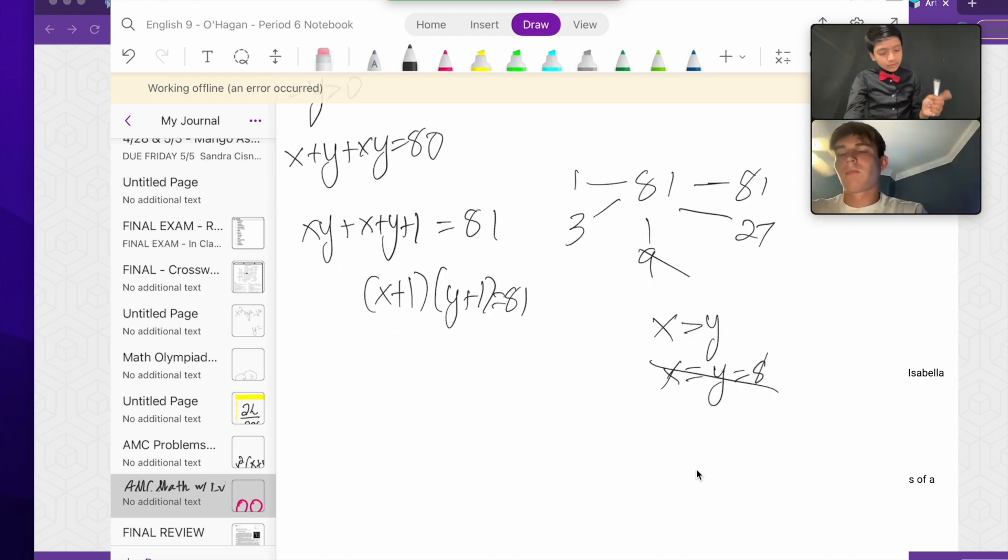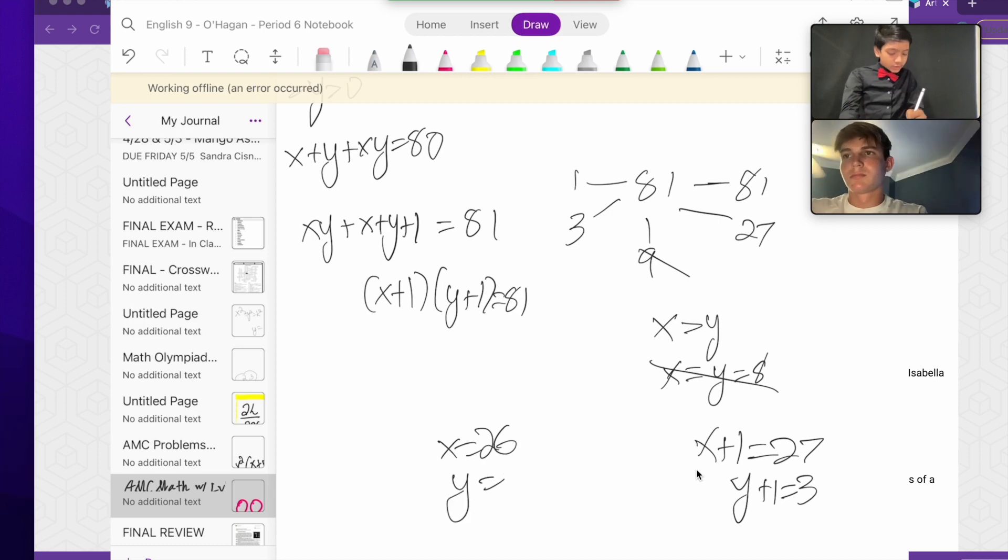We have 3 and 27. That's probably the most probable one because y is greater than zero. So x+1 is 27 and y+1 is 3. So I think x is 26 and y is 2.